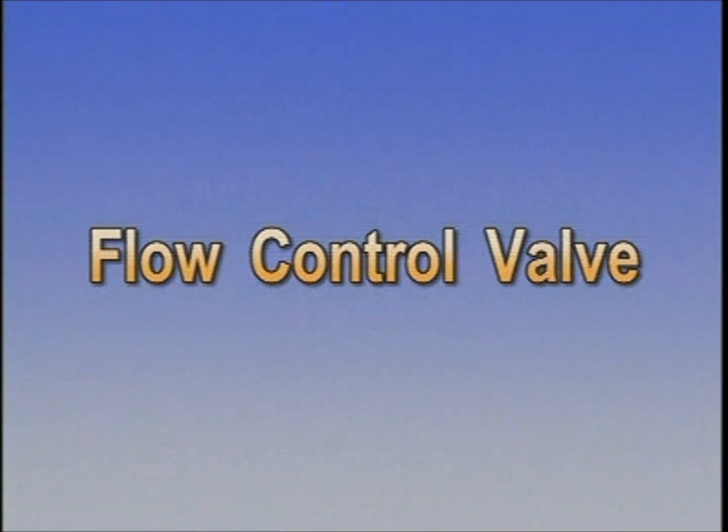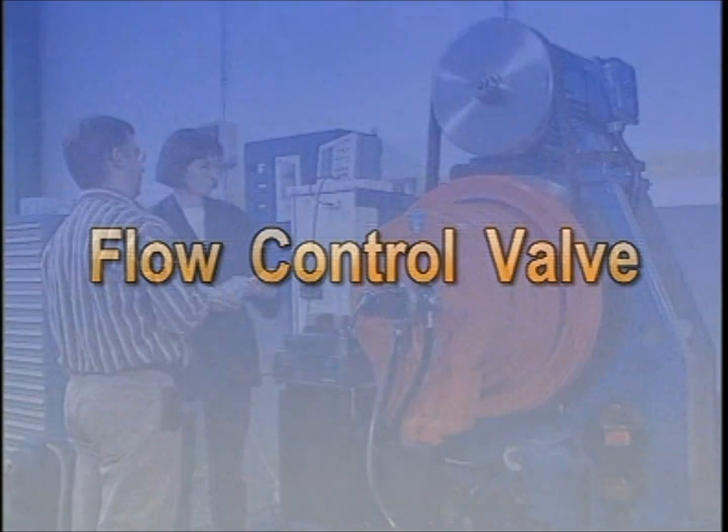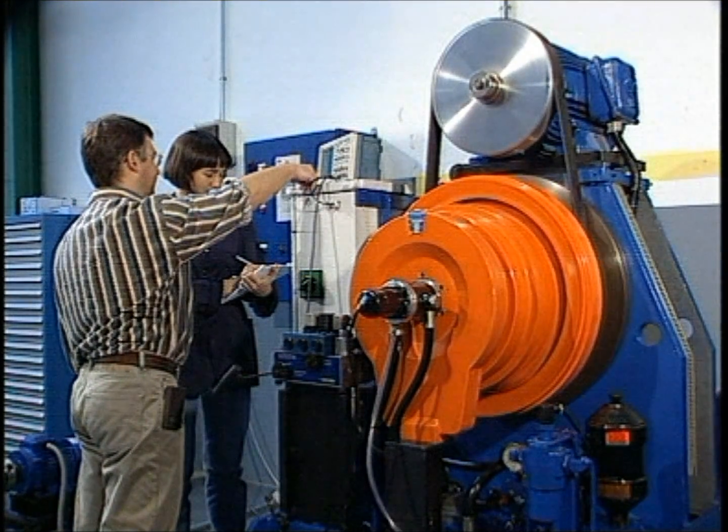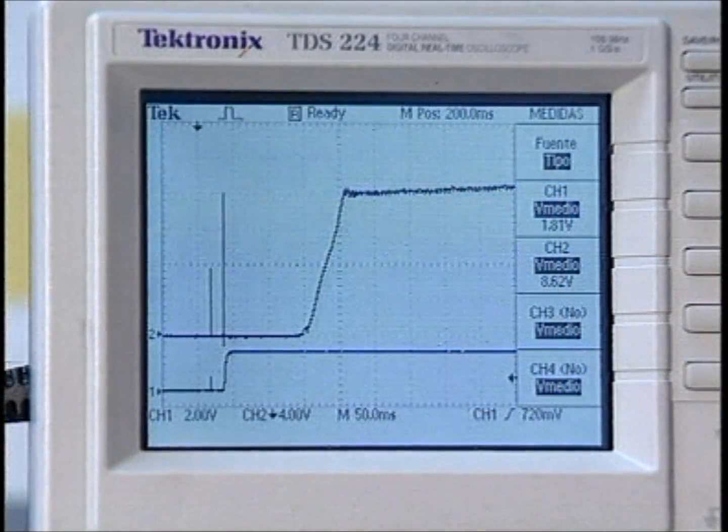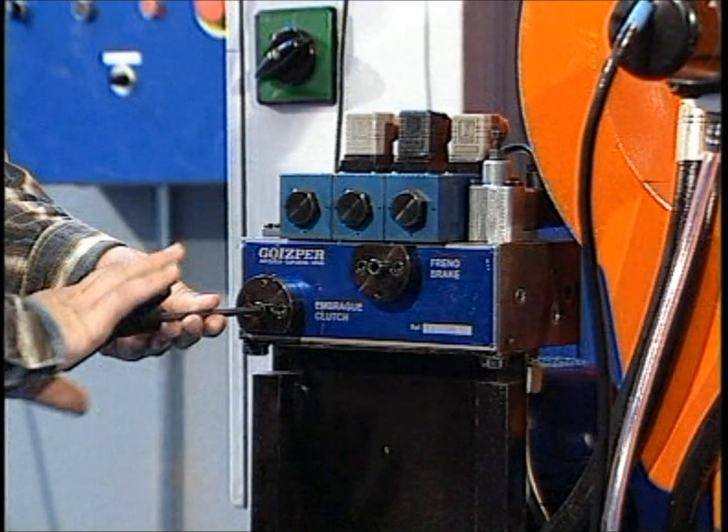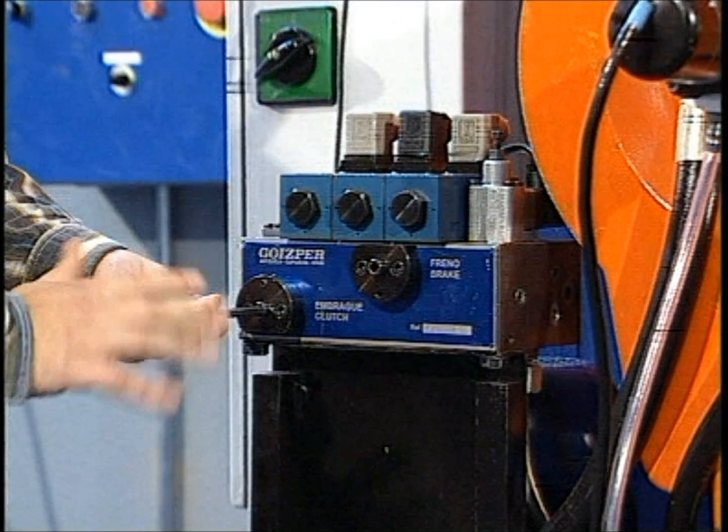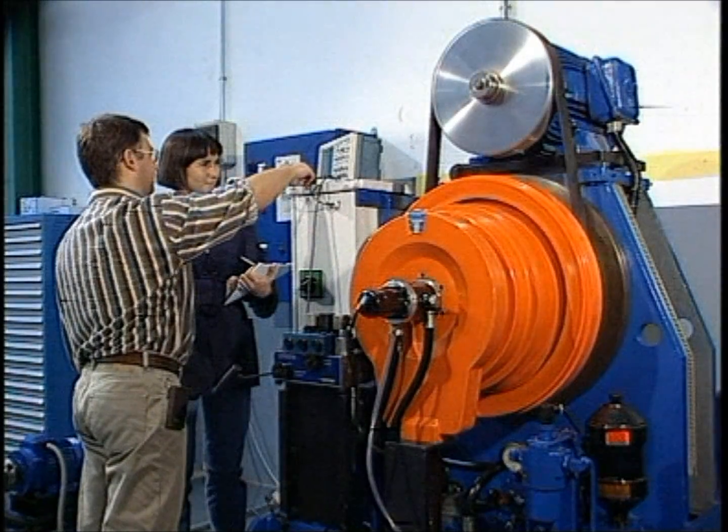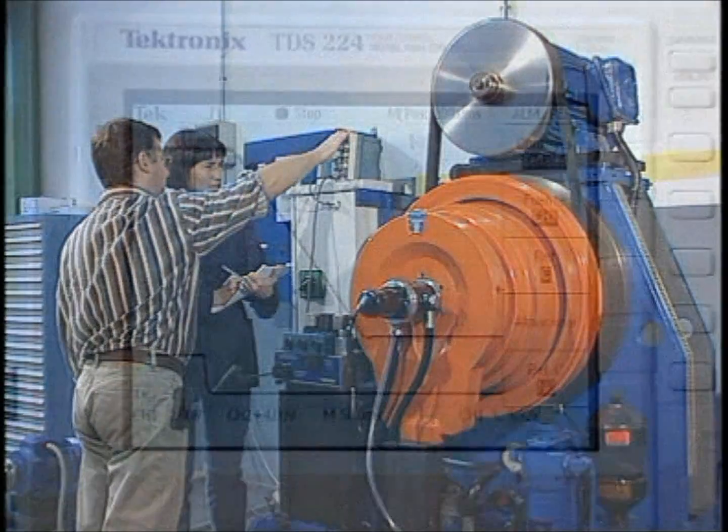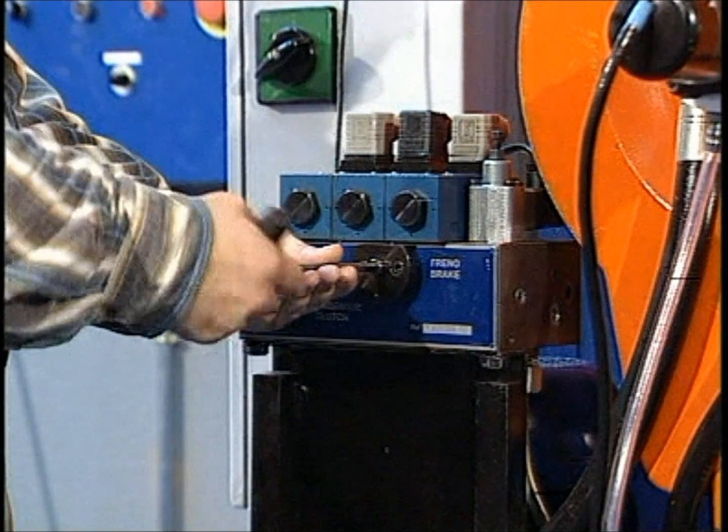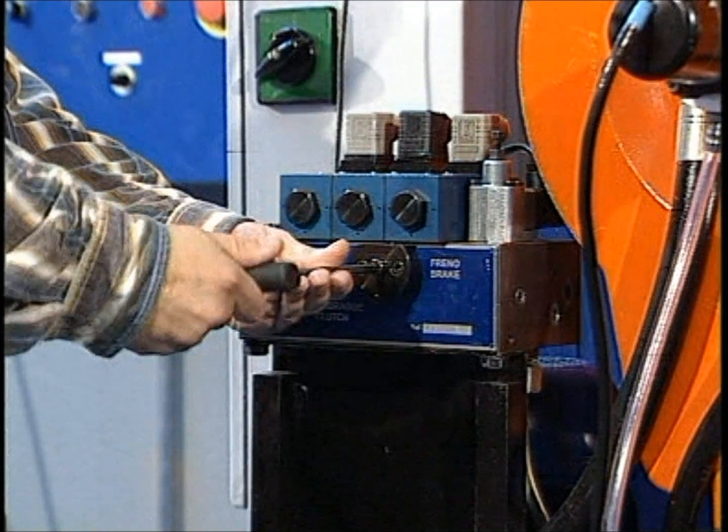Flow control valves. The smoothness of the clutch and brake response can be adjusted independently through the press safety valve depending on stroke and response time desired. Manually operated needle valves are integral to the valve body and control fluid flow. These are normally adjusted only during press setup.